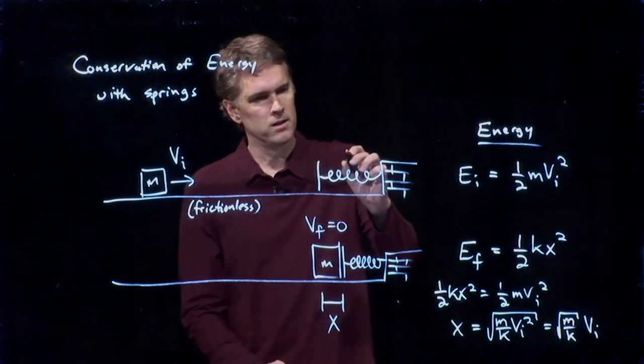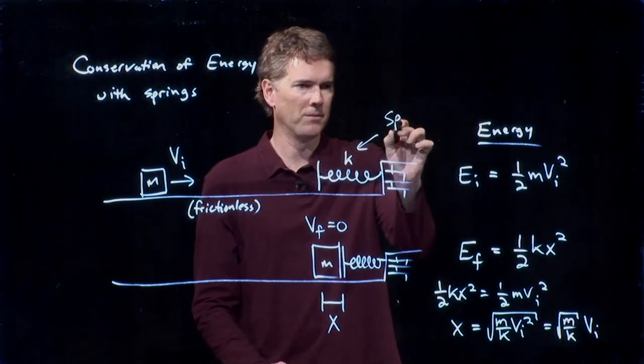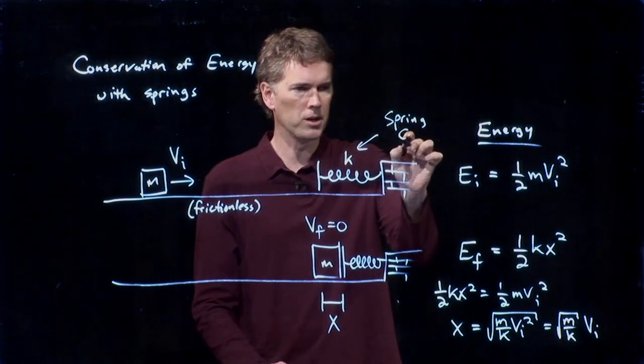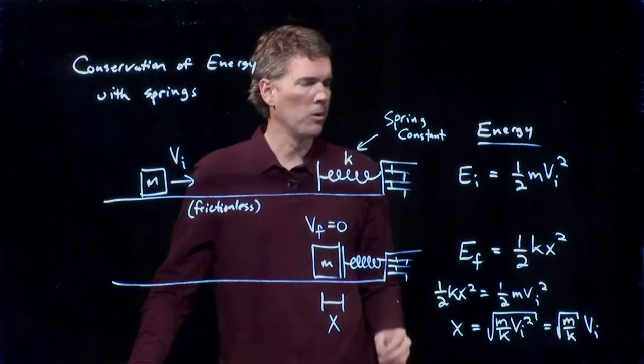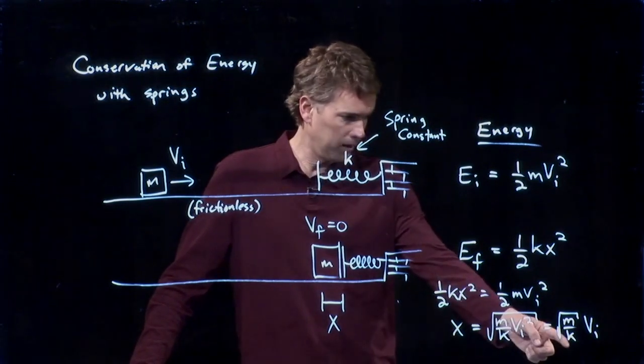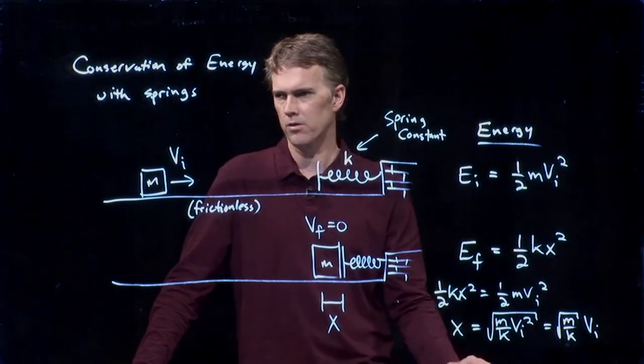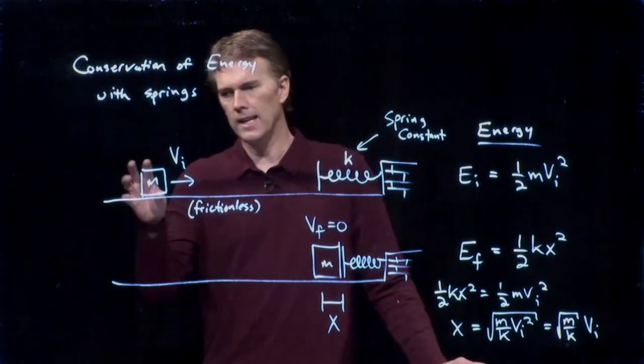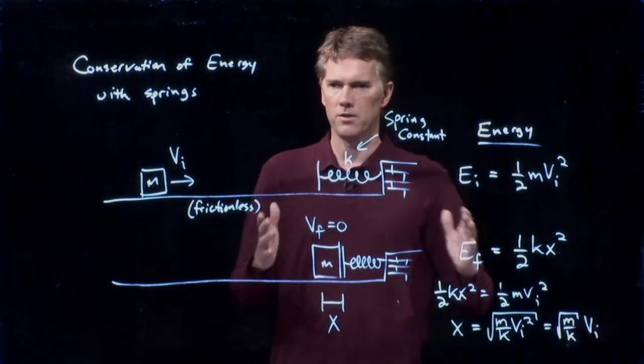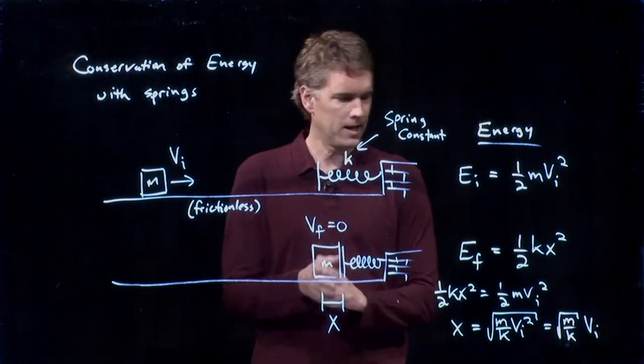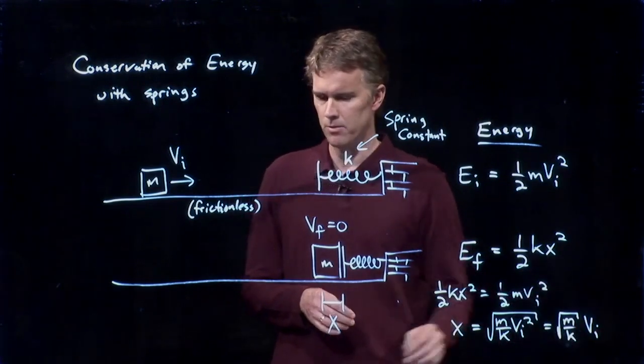If the spring is really strong, then k is a big number. A big spring constant means a strong spring. And so it will compress less. And that makes sense because it's in the denominator right there. If k goes up, then x, of course, goes down. And then finally, if I throw in this mass at a faster initial speed, it's going to compress that spring even more. So all those limits seem to indicate that we must have the right answer.